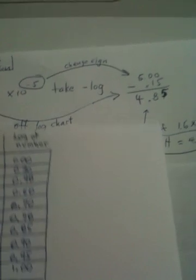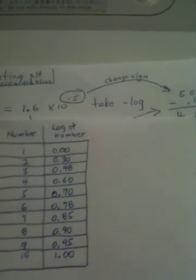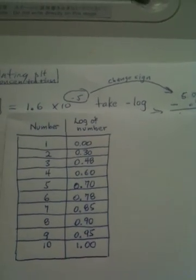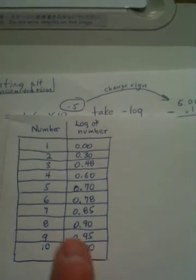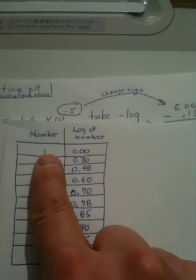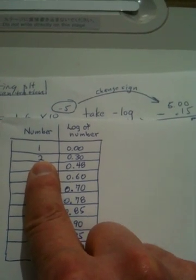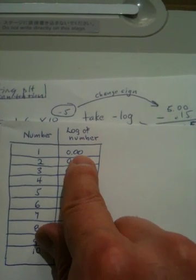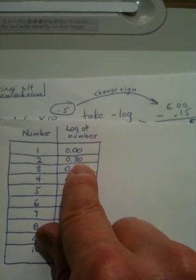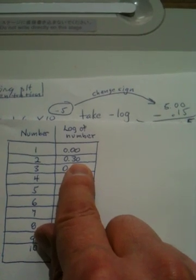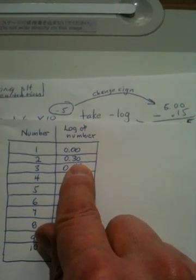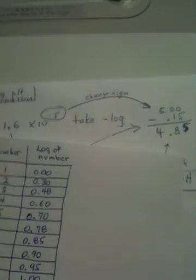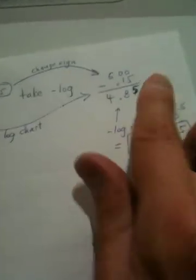We're going to now look at our log chart and find that 1.6. So we take the 1.6, and we see that that is right here between 1 and 2. We see that there's 0.30 down to 0.0, and we're about halfway in between, so we'll estimate that to be 0.15.